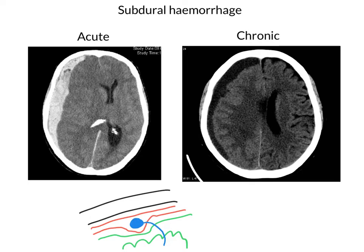At this point here, this is where the bridging veins bridge — they bridge the subdural space between the meningeal dura and the arachnoid. And this is the subdural space where our hematoma can collect.